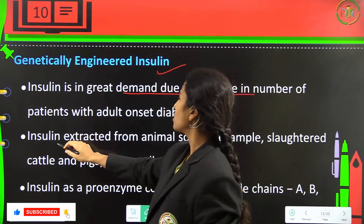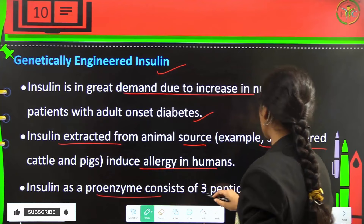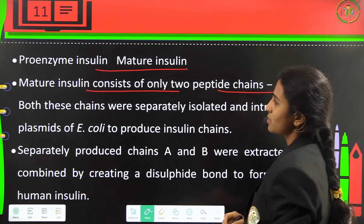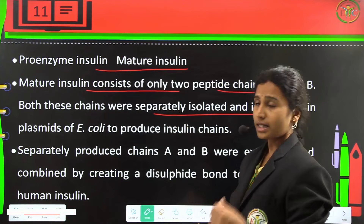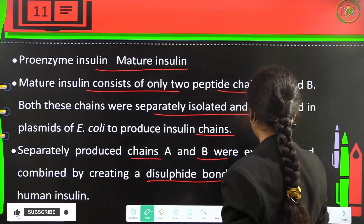Insulin extracted from animal sources such as slaughtered cattle and pigs can induce allergy in humans. Pro-enzyme insulin consists of three peptide chains A, B, and C. Mature insulin consists of only two peptide chains A and B. Both chains were separately isolated and introduced into plasmids of E. coli to produce the insulin chains. The separately produced chains A and B were extracted and combined by creating disulfide bonds to form mature human insulin.